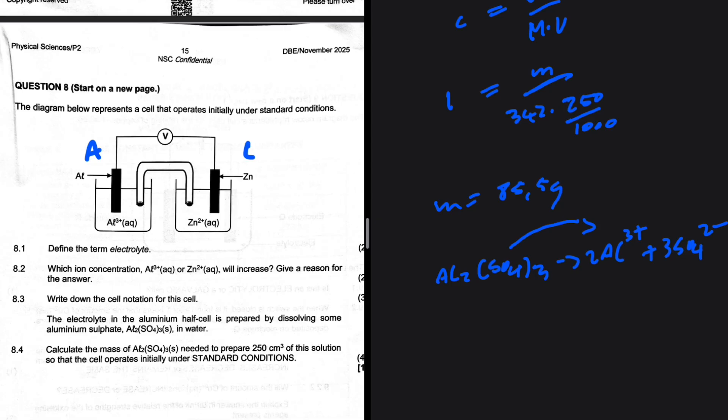We want that concentration to be 1 mole per decimeter cubed. So actually, the mass that gives us 1 mole per decimeter cubed should therefore be half of what we have calculated initially.